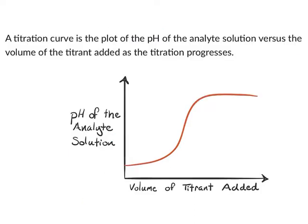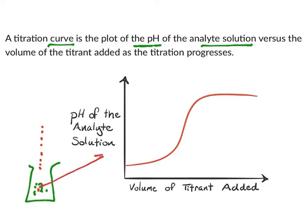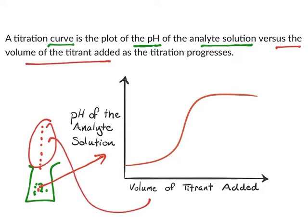A titration curve is the plot of pH of the analyte solution. We take the analyte in the conical flask, and when the titrant is added from the burette, the pH changes. This pH is plotted on the y-axis versus the volume of titrant added on the x-axis. The resulting curve is known as a titration curve.